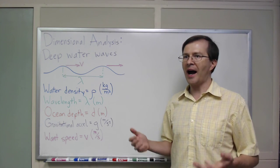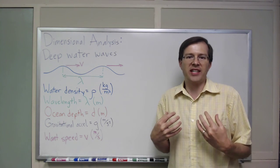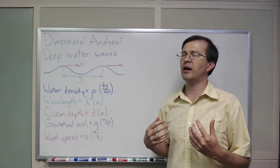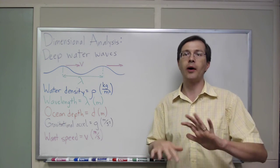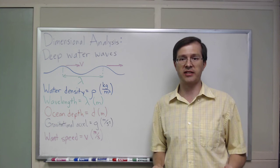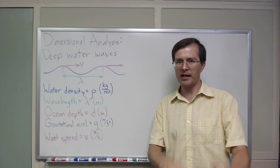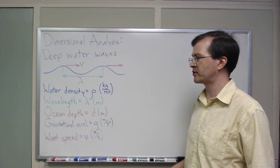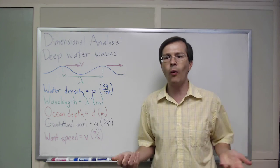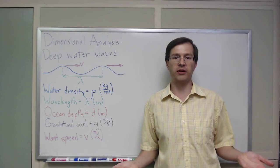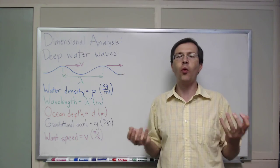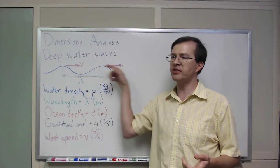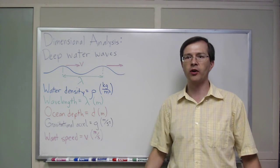It turns out I don't really know the physics behind the fluid dynamics to solve this properly — I would struggle to figure it out. But I can get nearly to the answer. This is a classic example of dimensional analysis. So let's think about what might be important — let's brainstorm what quantities could possibly be important for the speed of these deep water waves.